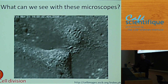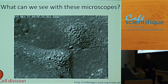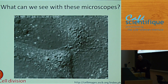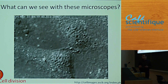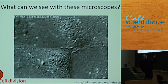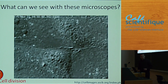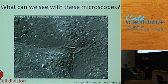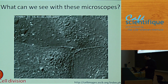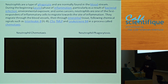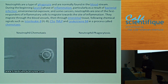We can see that with a regular microscope. I imagine that even back in the 1600s, if they were looking very carefully, they could probably see cells that were dividing. We can also see cells moving.